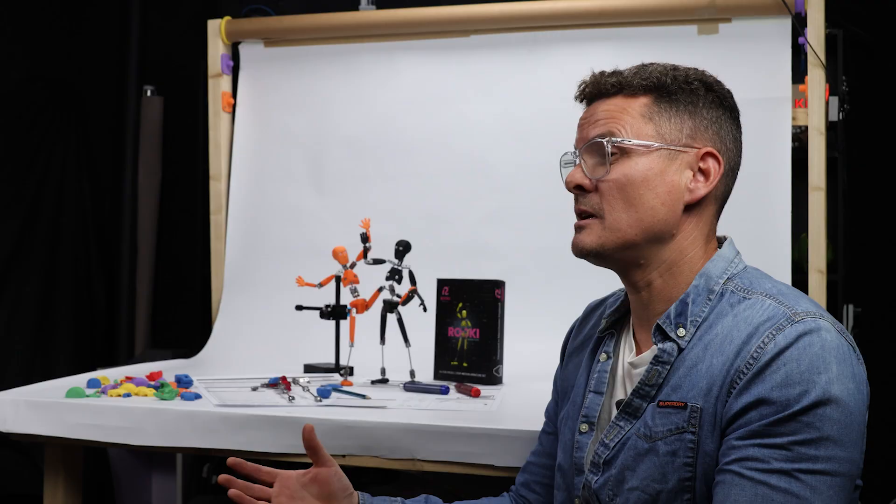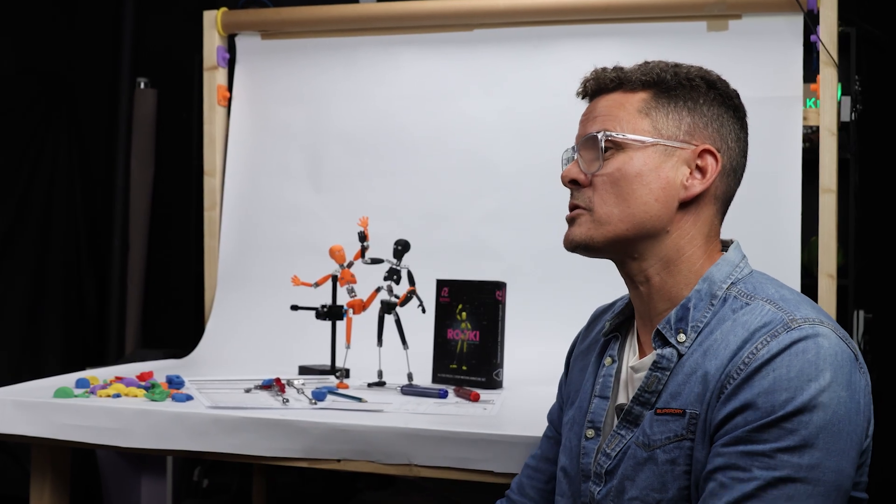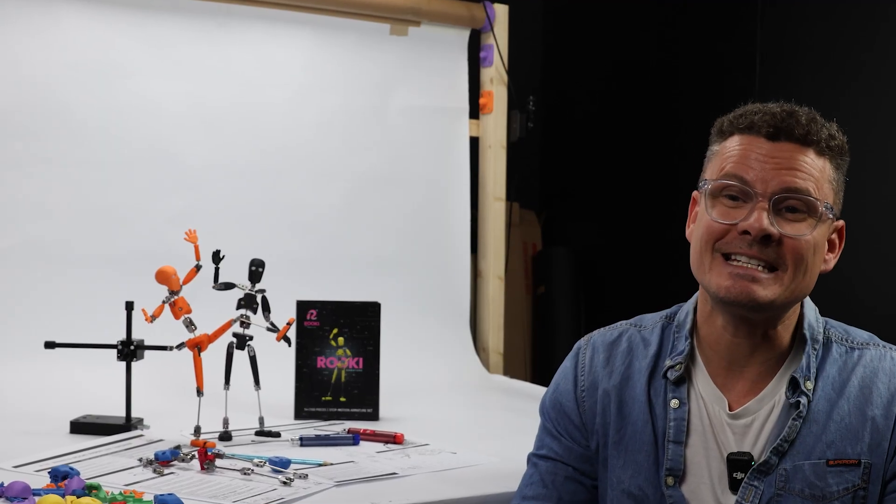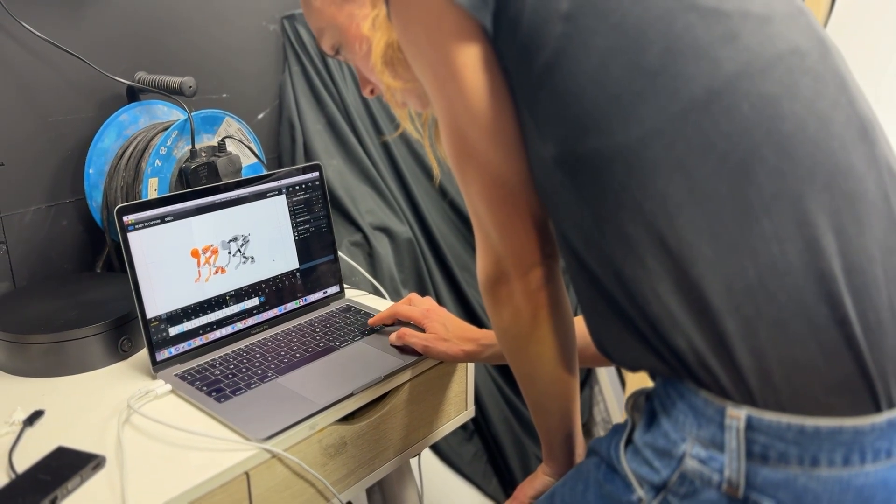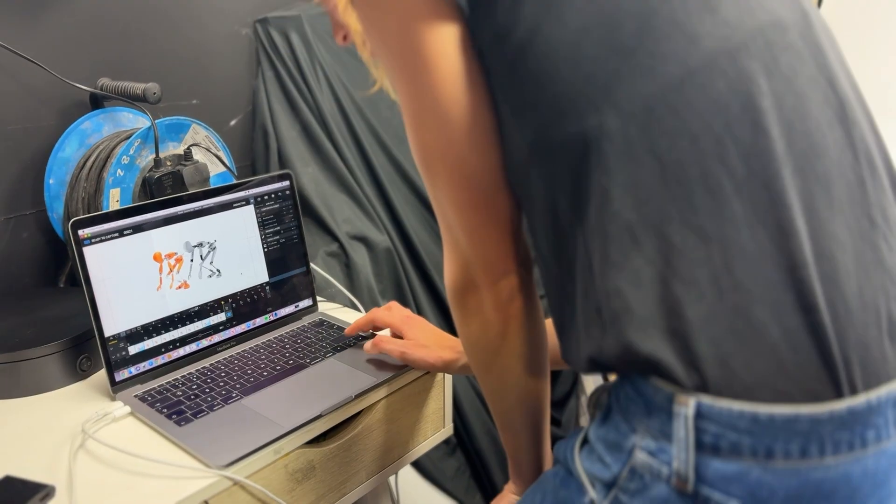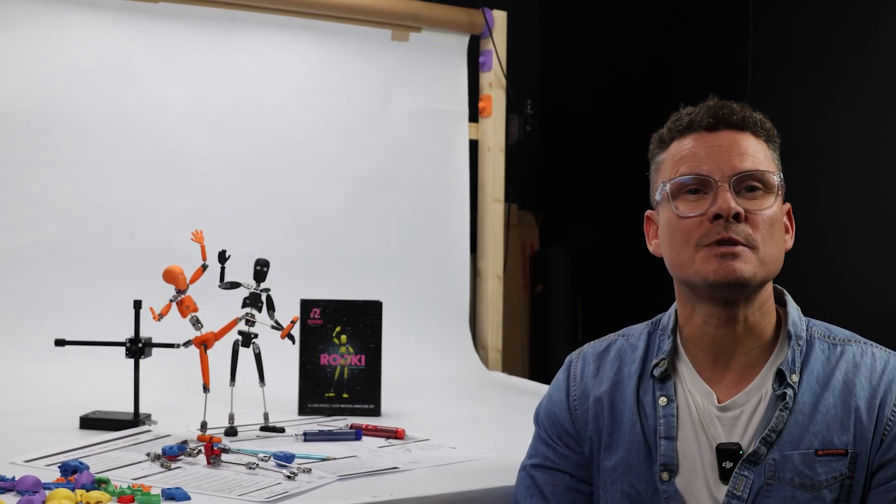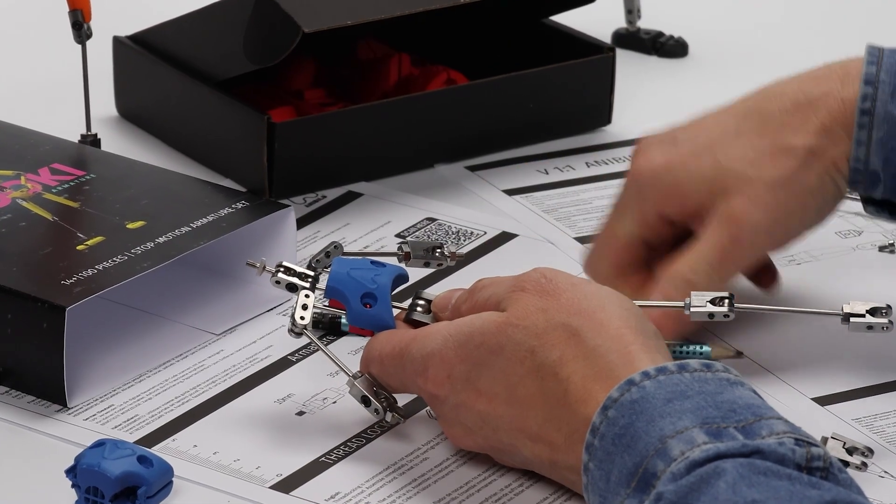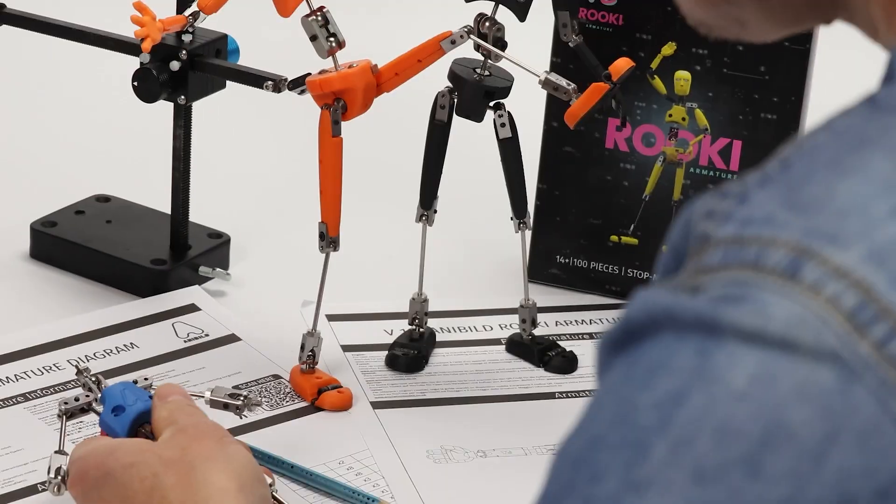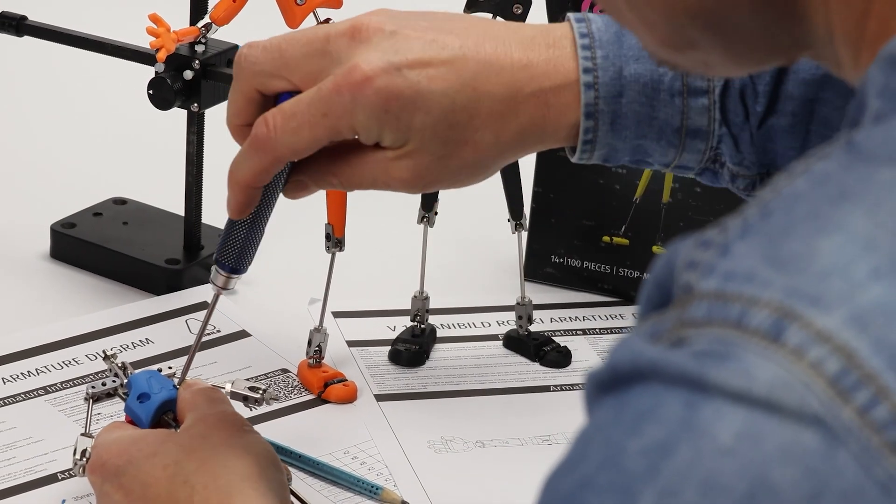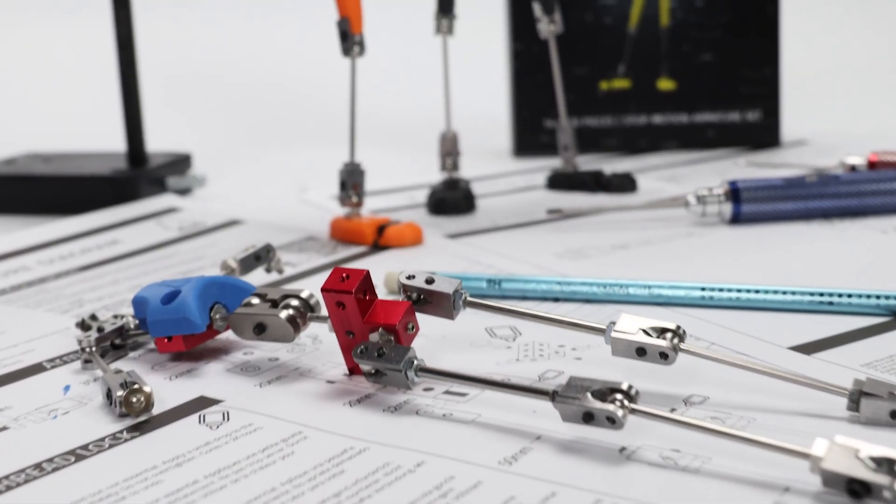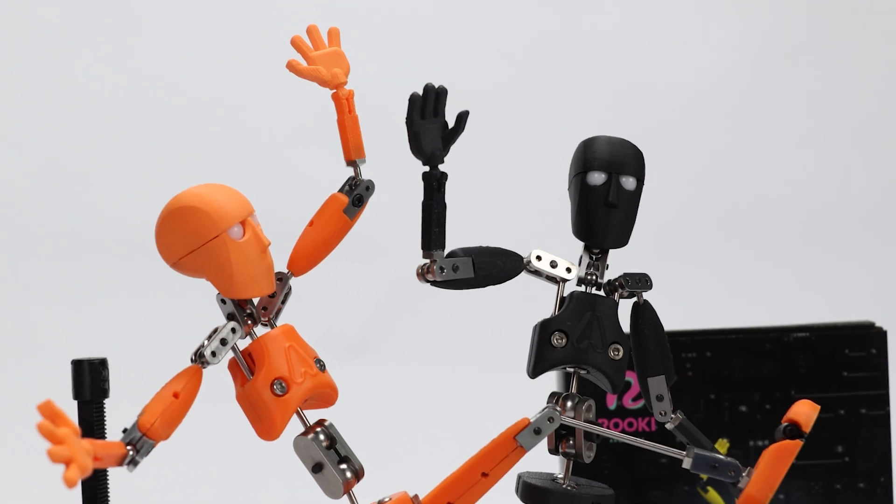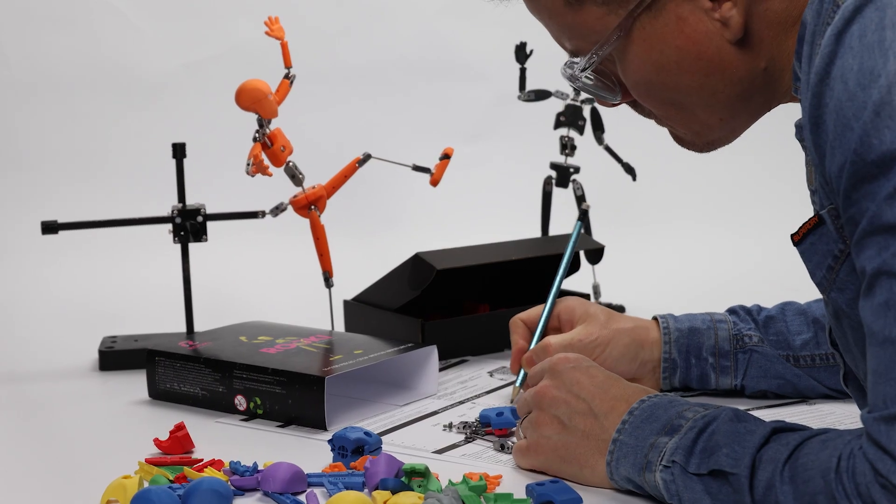This is why stop motion is loved so much, but learning stop motion animation isn't easy. There are so many facets to the art. The Rookie armature bridges the gap between maker, tutor, and animator. Rookie is a CNC-machined professional armature that's really easy to assemble. It's got a body pack that brings the human form to life, and it's ultimately poseable for stop motion. But the real magic lies in the digital asset packs.